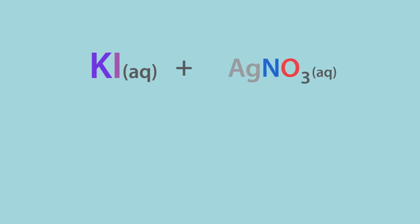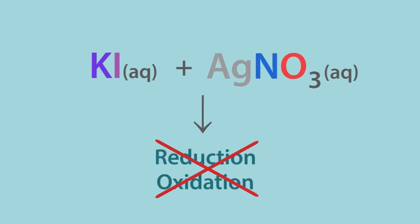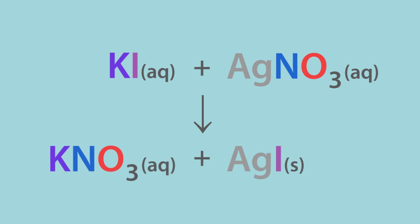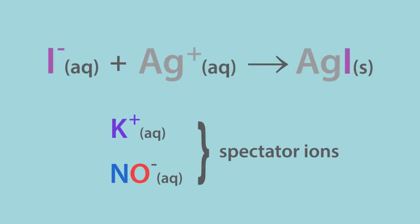Some ionic reactions do not involve reduction or oxidation, but involve swapping spectator ions, like this. In this reaction, the potassium and nitrate ions are spectator ions.